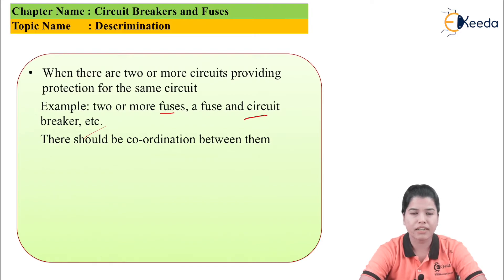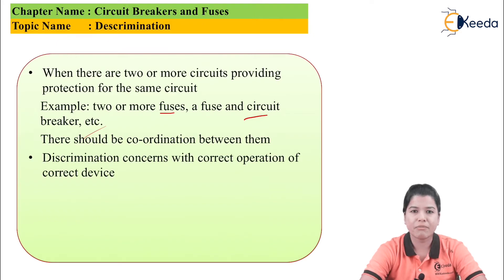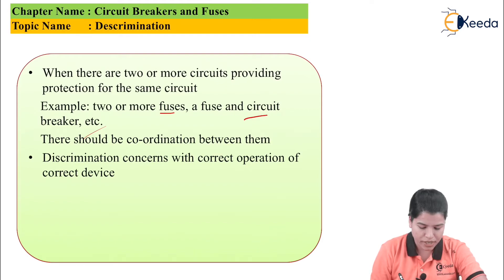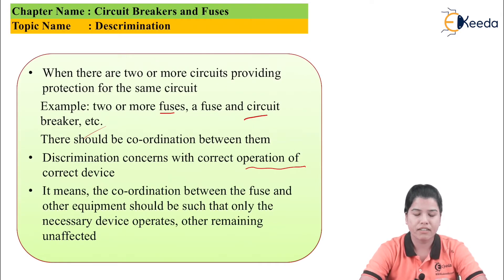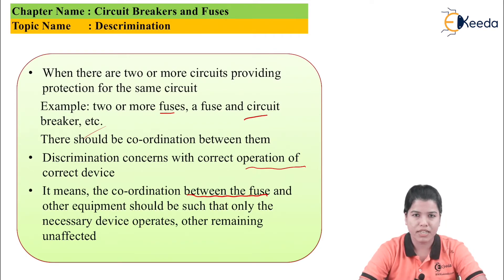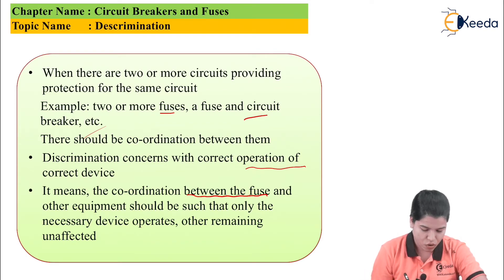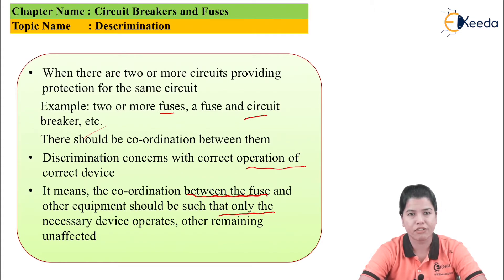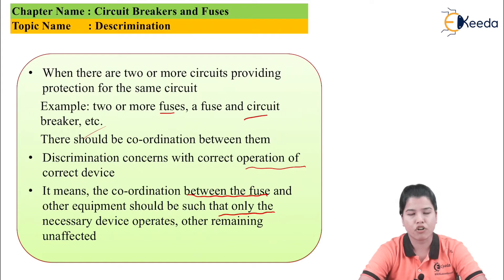Suppose a fuse and a circuit breaker are connected together. There should be proper coordination between the fuse and the circuit breaker connected for the protection of the motor. Discrimination is the property which concerns the operation of the correct device, meaning only the equipment that is necessary to protect the device should operate.